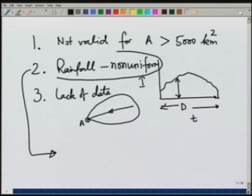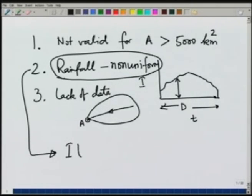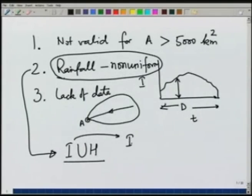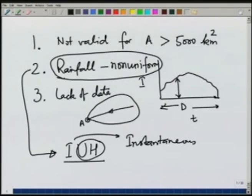We will start with the non-uniform rainfall and how to analyze it. We use a method known as IUH, or Instantaneous Unit Hydrograph, where I stands for instantaneous and UH is of course the unit hydrograph. Let us look at what is an instantaneous unit hydrograph and how we use it to generate direct runoff for a non-uniform rainfall.